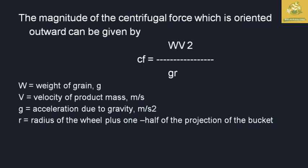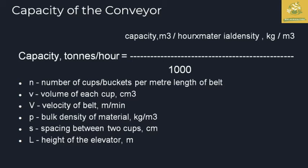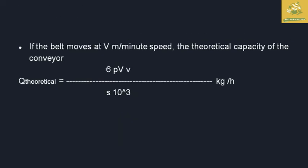Those are the explanations for the symbols in the centrifugal force formula. The capacity of the conveyor can be calculated by: capacity = (volume per hour × material density) / 1000. The theoretical capacity of the bucket elevator can be calculated by the formula: 6·P·v / (s × 10³) kilograms per hour, where that gives the theoretical capacity of the conveyor.